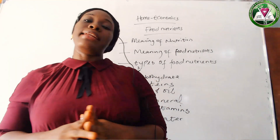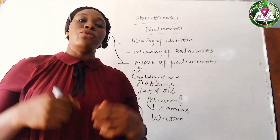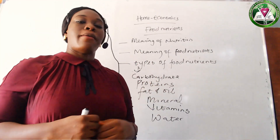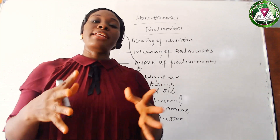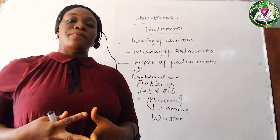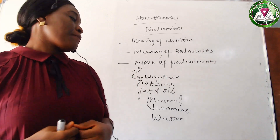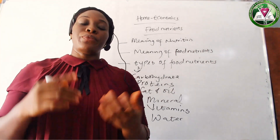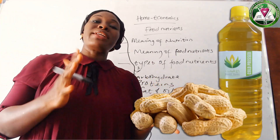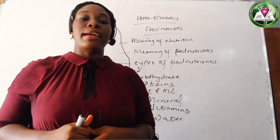The next one is fat and oil. Fat and oil is also an energy giving food — they give us energy more than carbohydrates, twice that of carbohydrates. The functions of fat and oil include giving us energy and heat. The food sources of fat and oil include butter, groundnut oil, and palm oil.